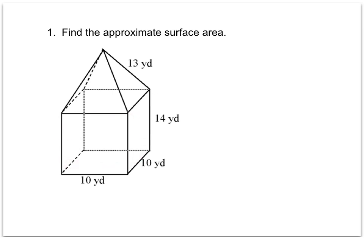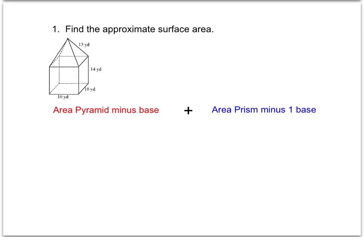Same thing for the rectangular prism — when we set that pyramid on top, the top base is going to be covered up, so we're going to subtract out one base of the rectangular prism. I would suggest that you write these out and do them separately: find the area of the pyramid and subtract out the base, then add that to the area of the prism minus one base.